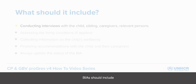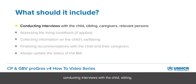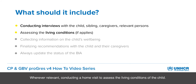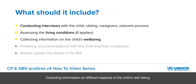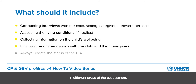BIAs should include conducting interviews with the child, sibling, current caregivers or any other relevant persons. Wherever relevant, conducting a home visit to assess the living conditions of the child. Collecting information on different aspects of the child's wellbeing in different areas of the assessment. And finalizing recommendations with the child and the caregivers.